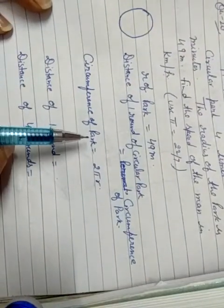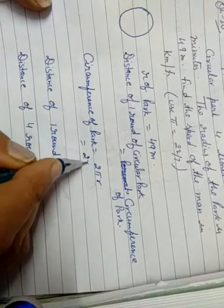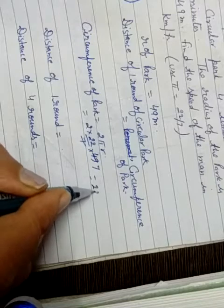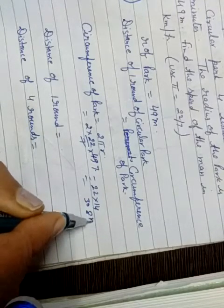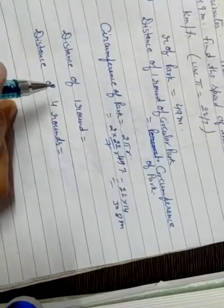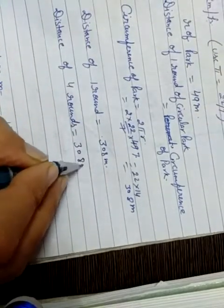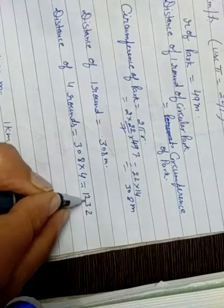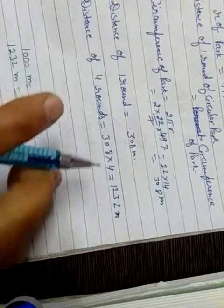First we find the circumference of the park. Circumference = 2πr = 2 × (22/7) × 49. Since 7 × 7 = 49, the 7s cancel: 2 × 22 × 7 = 308 meters. So the distance covered by the man in 1 round is 308 meters. Distance for 4 rounds = 308 × 4 = 1232 meters.